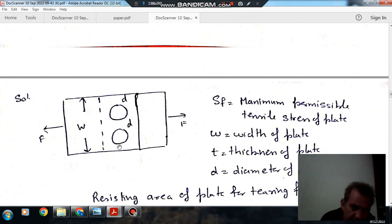It means if we subtract this length that is D and this length D, then the length becomes W minus 2D.